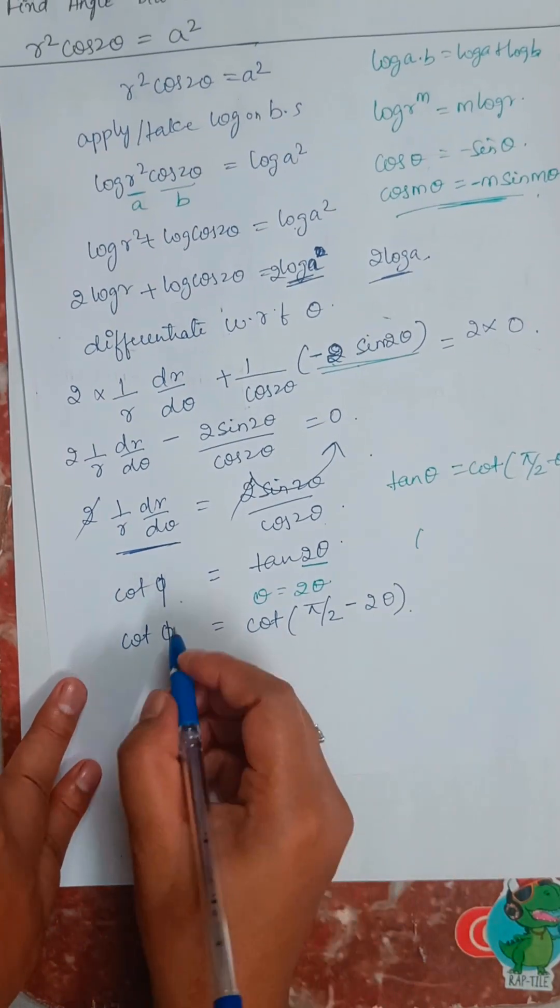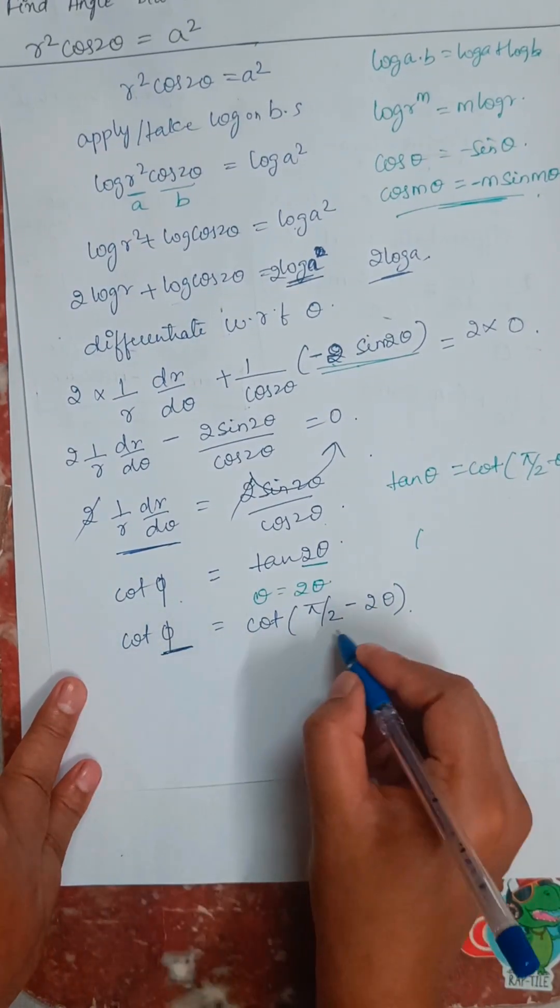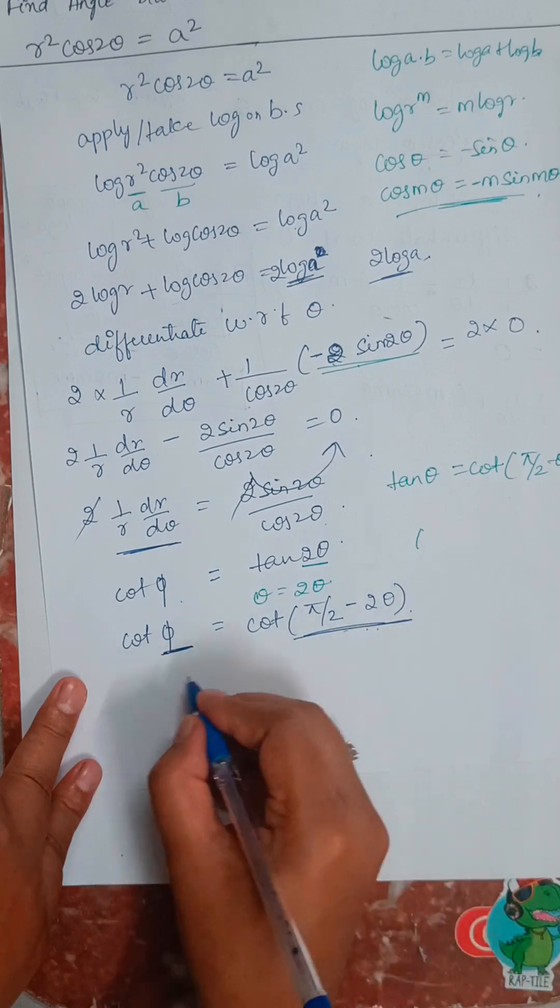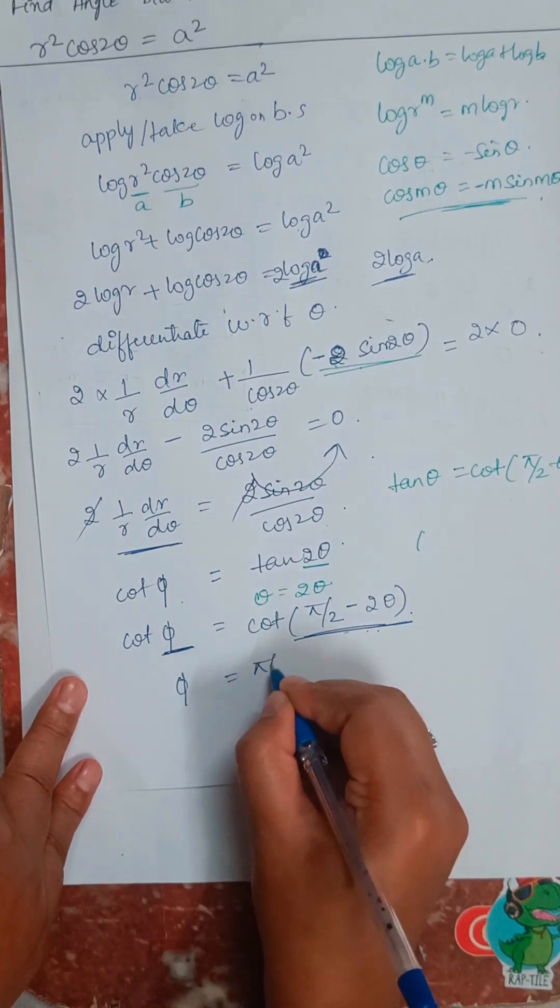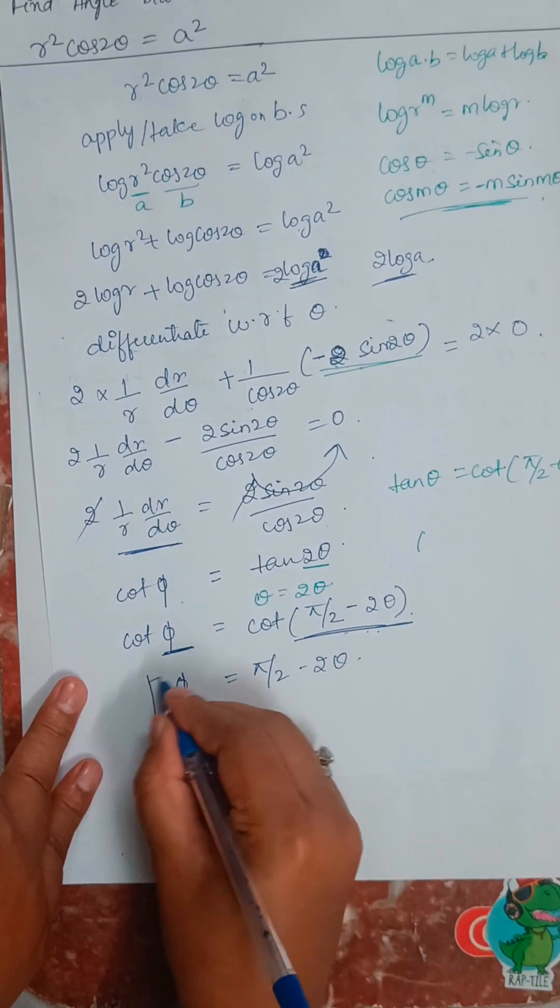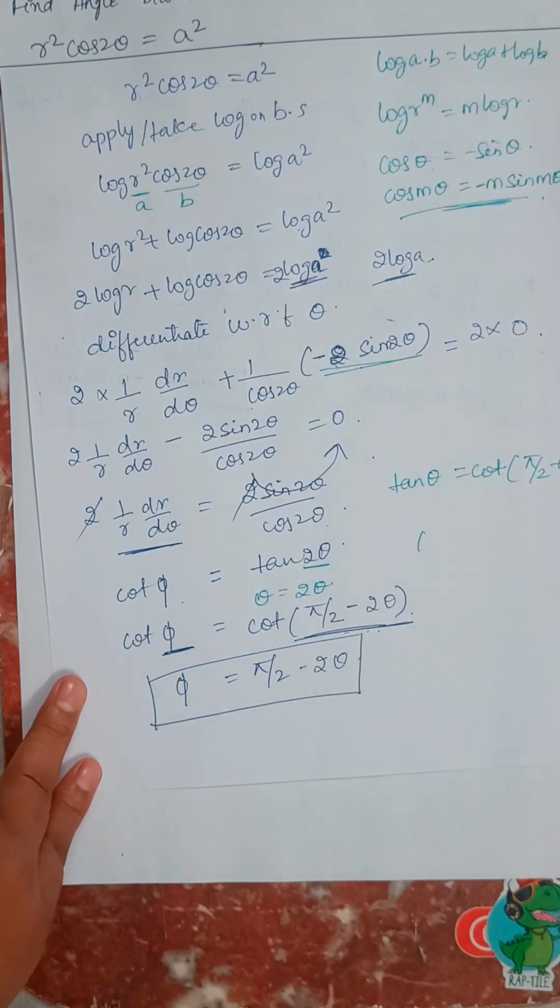So here, what is phi? This value. So phi equals pi by 2 minus 2 theta. So this is our answer.